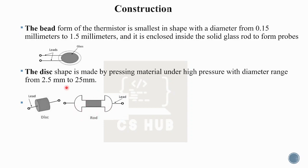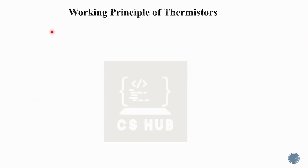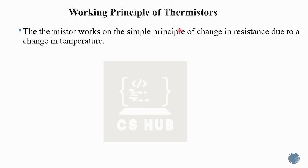Thermistors are available in three different shapes. The working principle is based on resistance change with temperature. The thermistor works on the simple principle of change in resistance due to a change in temperature.